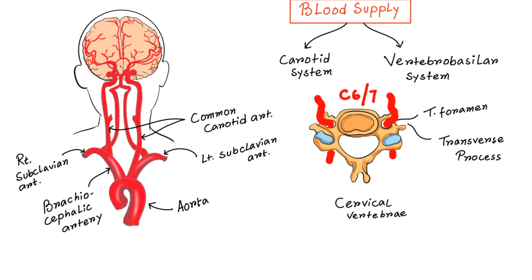They then proceed superiorly in the transverse foramen of each cervical vertebra. Once they have passed through the transverse foramen of C1 which is also known as atlas, the vertebral arteries travel across the posterior arch of C1 and through the suboccipital triangle before entering the foramen magnum. Inside the skull, the two vertebral arteries join to form basilar artery at the base of pons.